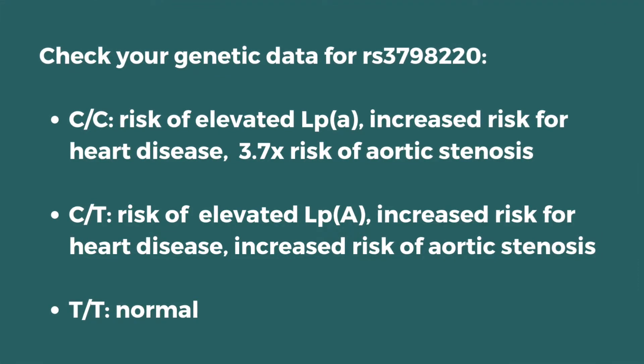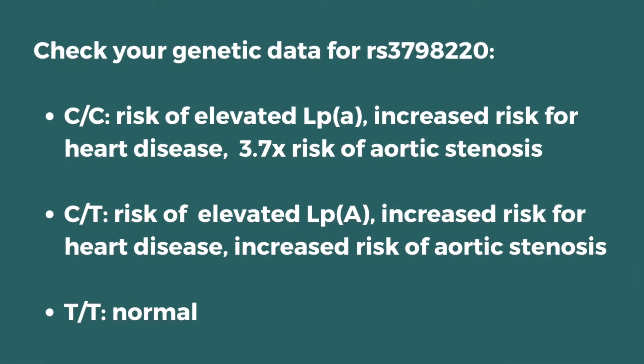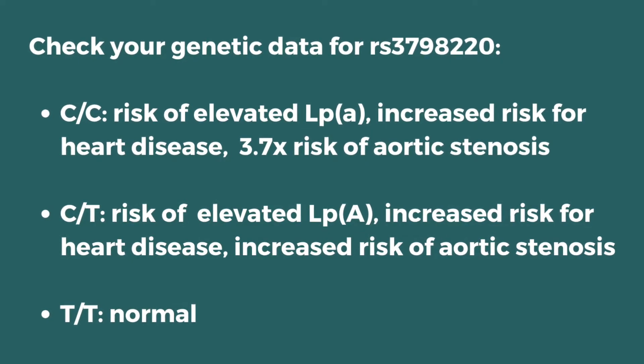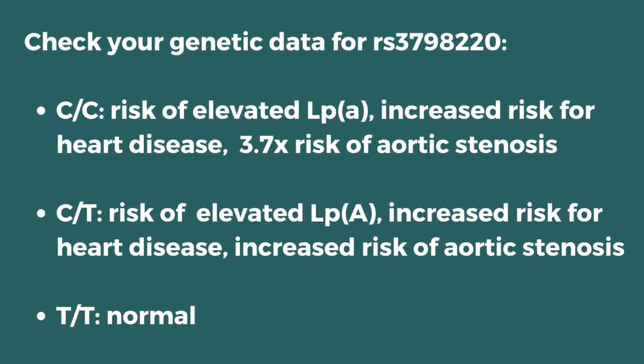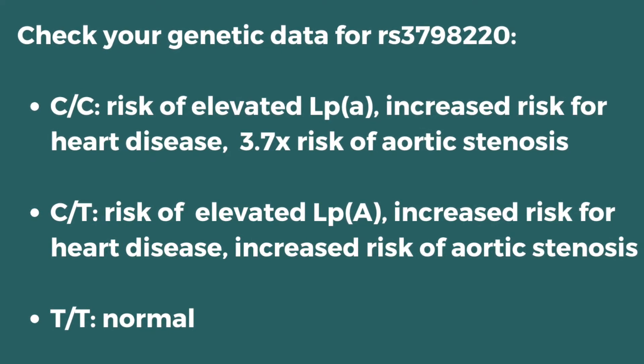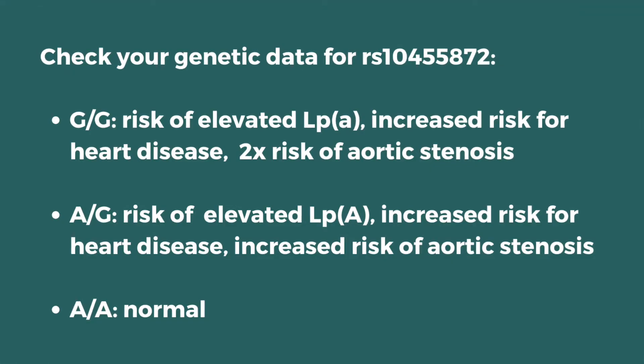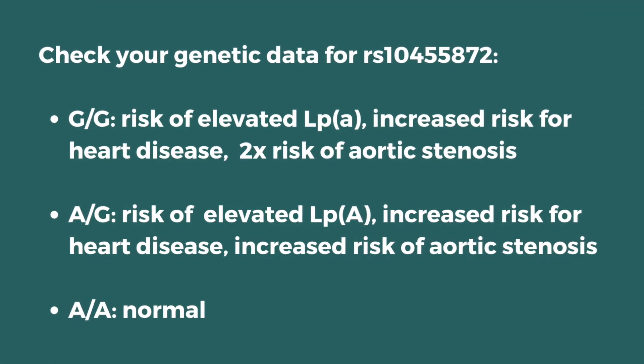Here's what to check for and I'll put them up on the screen for you as well. The first SNP is actually the biggest risk factor. Check your raw data for RS3798220. If your genotype is CC or CT you're at an increased risk for having elevated lipoprotein a. There's a second SNP that also increases the risk, but the increase isn't quite as much as for that first SNP.